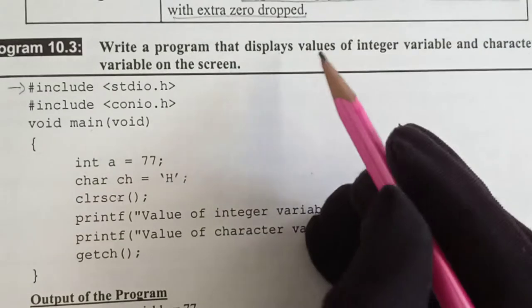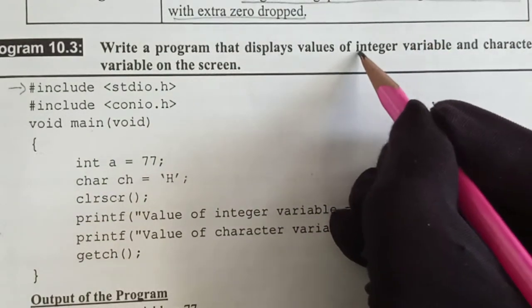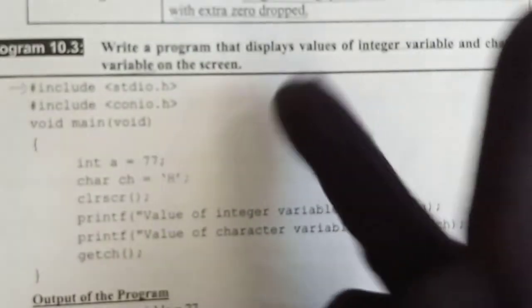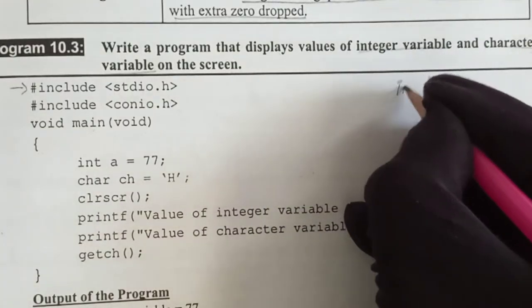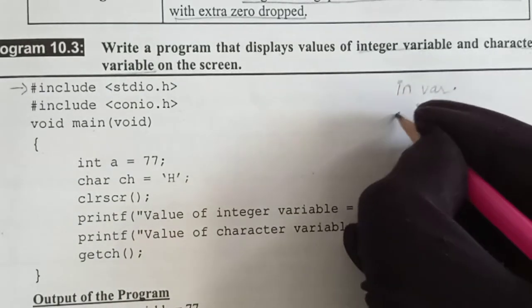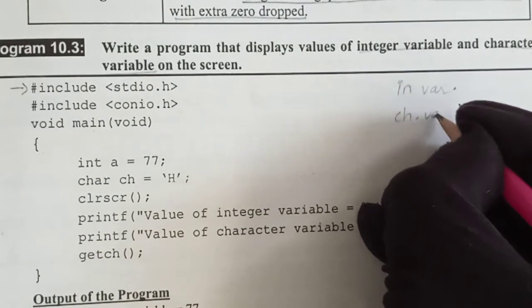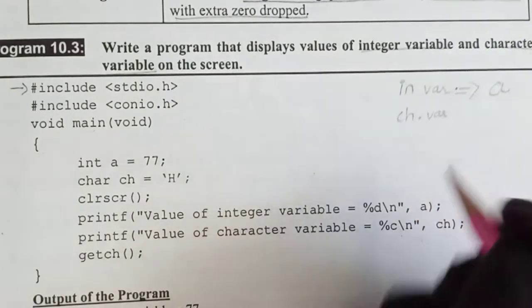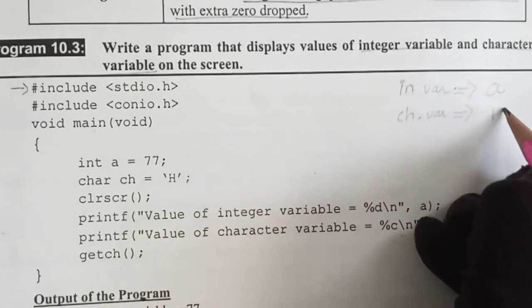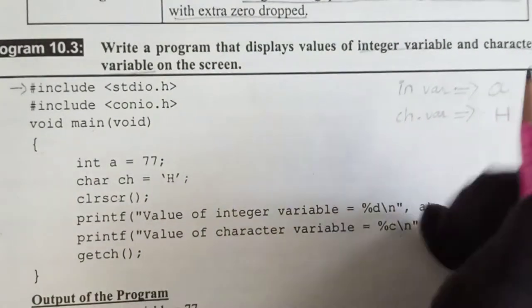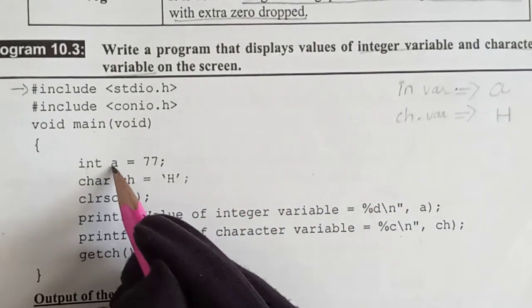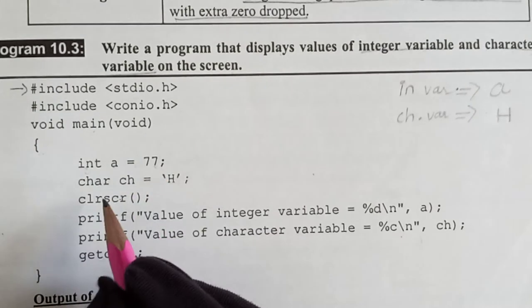Now consider what we need. What are the requirements? We need one integer variable and one character variable. We need two things - one integer variable and one character variable. Now we consider integer variable as a and we give it value 77.